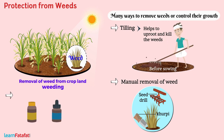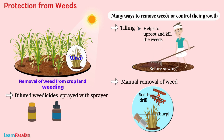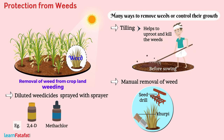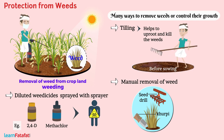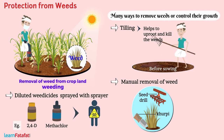Some chemicals called herbicides are diluted to the required extent and sprayed with a sprayer to control weeds. These chemicals are toxic to the human body and so must be handled carefully. Before spraying, the nose and mouth must be covered with a clean cloth or mask.